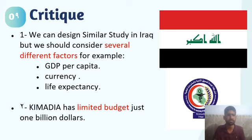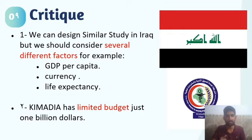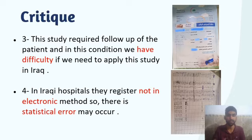Second, Kimadia (Iraq's state drug company) has a limited budget of just $1 billion, limiting drug availability from the Ministry of Health's perspective. From the patient's perspective, Iraqis do not have health insurance. Third, this study required patient follow-up, which would be difficult in Iraq because patients may not comply and may die from causes other than diabetes.